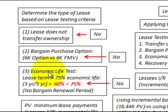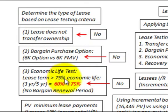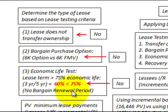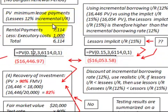Third, the economic life test: the lease term must be greater than 75% of the economic life. We have a three-year lease term and a five-year life, so the lease term is only 60%, which doesn't surpass the 75% hurdle rate. We fail that test. There's also no bargain renewal period included, so it's not a factor.